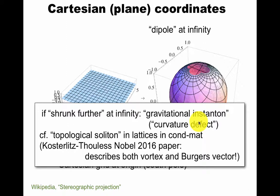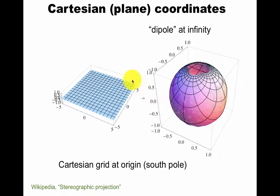Here's a side comment. If shrunk further to infinity, this clump here becomes a small clump that's called a gravitational instanton or curvature defect. This is like a topological soliton or instanton in lattices in condensed matter, for example. This paper that gave them the Nobel Prize describes both a vortex in some complicated setting but also a Burgers vector, which is a defect in a lattice. So these localized lattice defects in flat physics can be described by similar methods to when people talk about complicated things like gravitational instantons. What I'm trying to say here is that even though it looks completely flat down at the south pole, you can have some localized curvature.